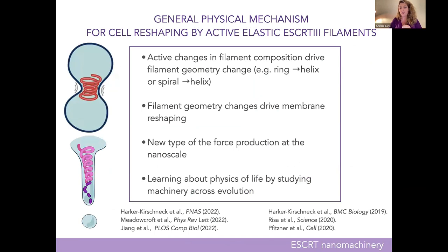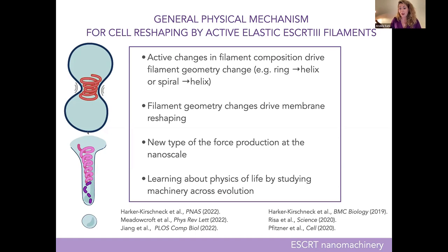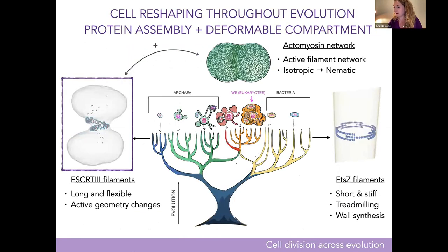To wrap up the archaeal and ESCRT side: active changes in filament composition drive global geometry changes — from ring to helix in archaeal division, or spiral to helix in small vesicle budding — and this filament geometry change is transferred to the membrane. It's a different type of force production at the nanoscale compared to actin and microtubules, which consume energy at the individual molecule level. Here you get a whole nanoscale structure completely remodeled to produce force. In our group we like to study physics of life throughout evolution because going back in evolutionary time the machinery is likely simpler, while the key physical principles are preserved.